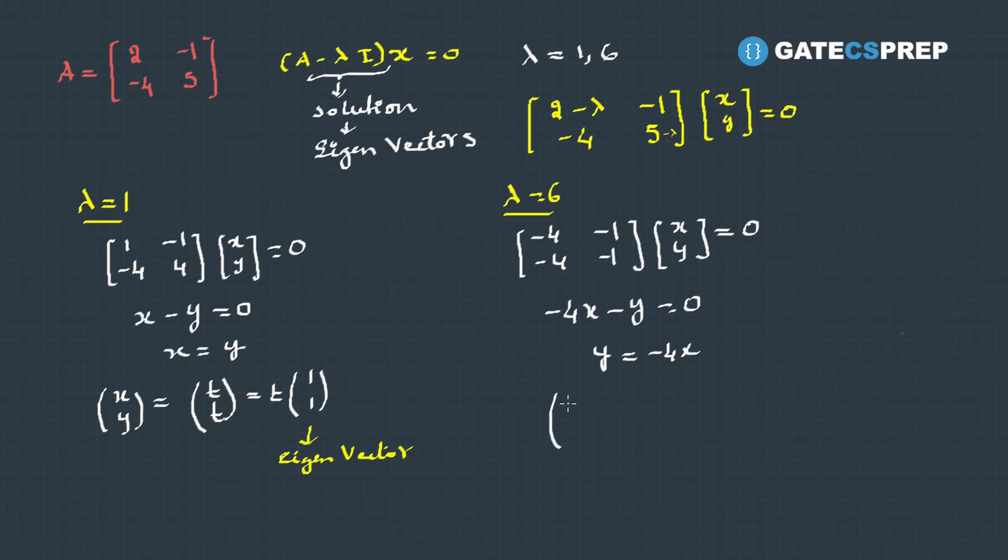That is, the solution can be written as x,y equals, if I take x as t, y is -4t. If I take t common, it is 1 and -4. This is the second eigenvector.